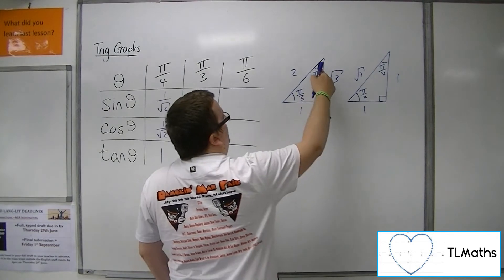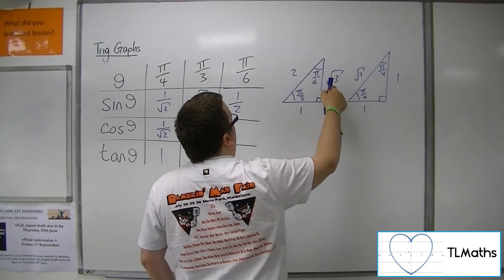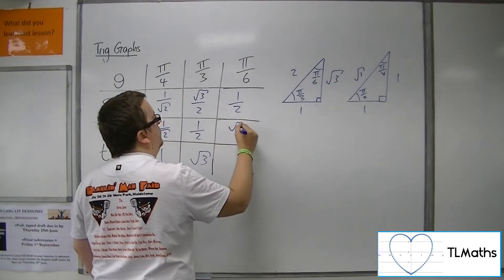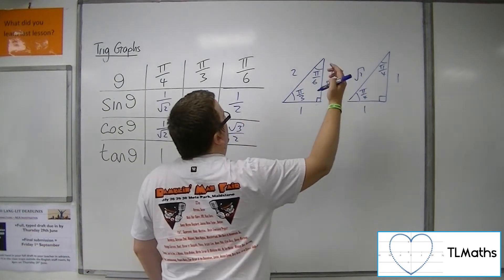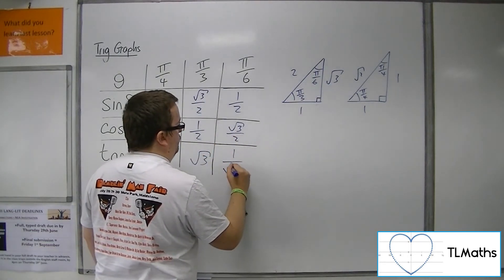Okay, sine of pi over 6 is opposite over hypotenuse, so 1 over 2. Cos of pi over 6 is adjacent over hypotenuse, so root 3 over 2. And tan of pi over 6 is opposite over adjacent, so 1 over root 3.